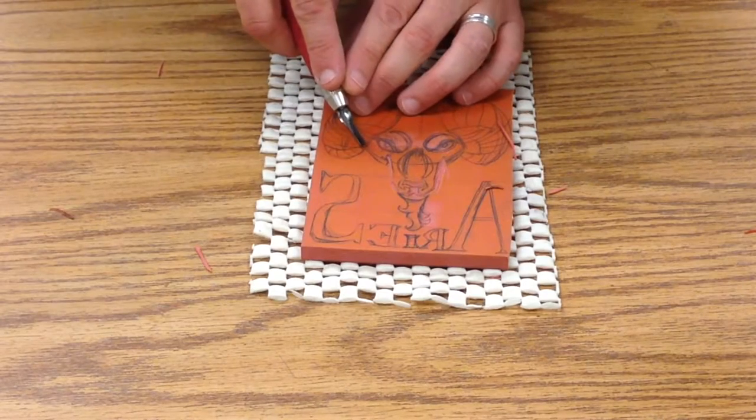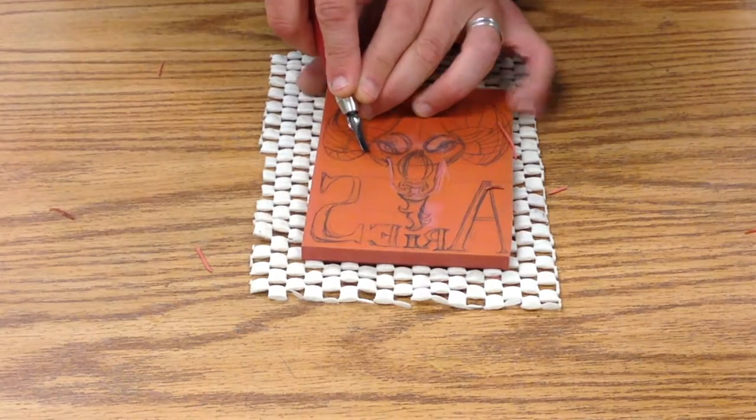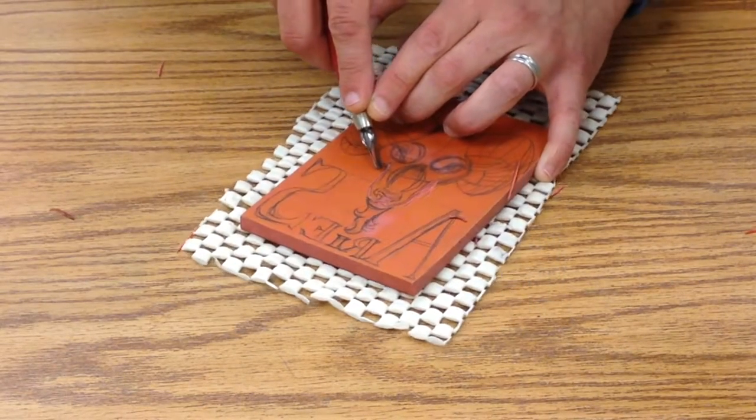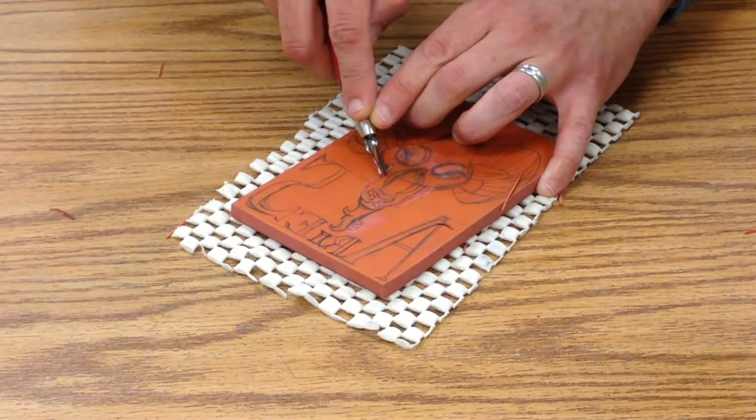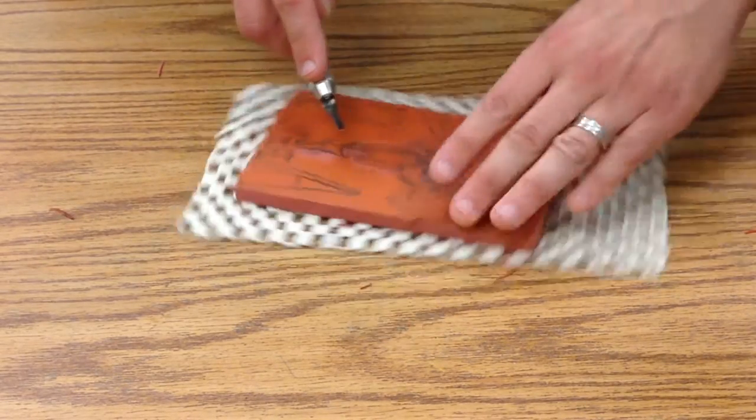Now sometimes if you have a curve like this, you can start cutting and then turn your block as you go so that your blade always stays in front of you.